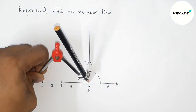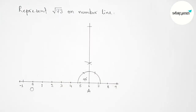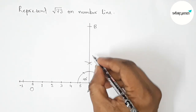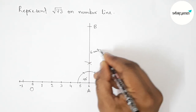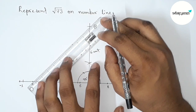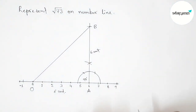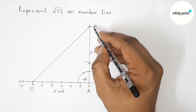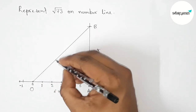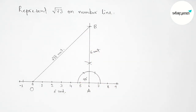Next, taking the length OA — that is six unit length — with the help of compass and cutting at point B. So AB is six unit length and OA is also six unit length. Now joining OB. So triangle OAB is a right angle triangle and OB is the hypotenuse, which is obviously root 72 unit length.